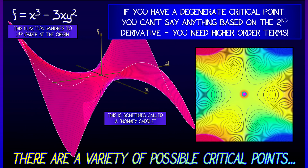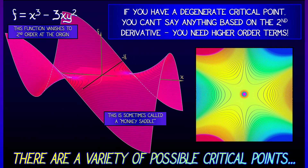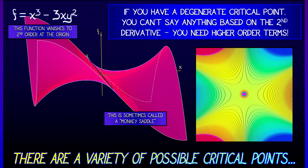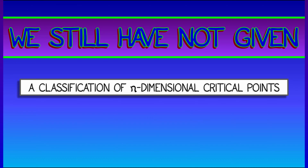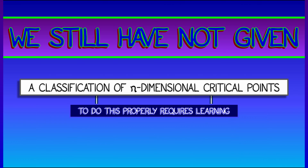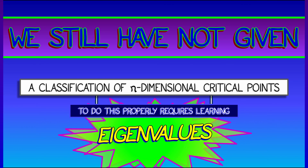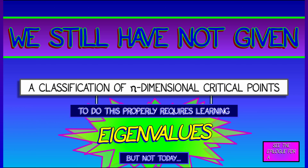Can we classify all of those higher order things? We've still not really given a classification theorem that's going to work in dimension higher than 2, so this is a little unsatisfying. To do it for real requires learning eigenvalues, and I'm not going to teach you that. You can take a look at the epilogue for a few hints on how that works, and then take a serious linear algebra course.